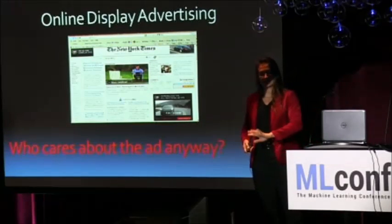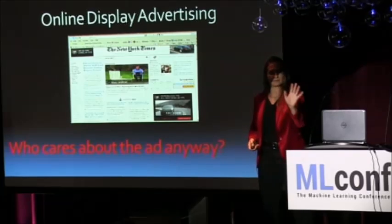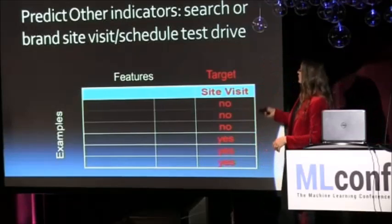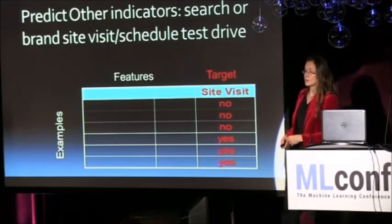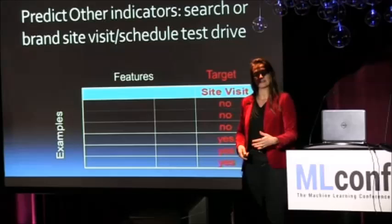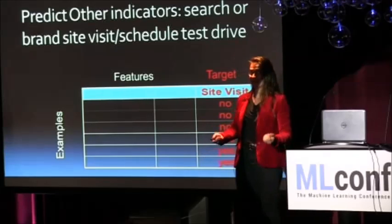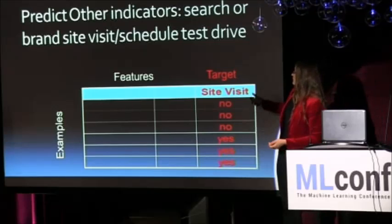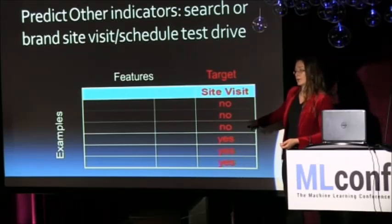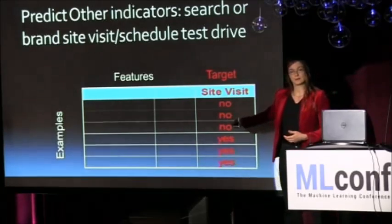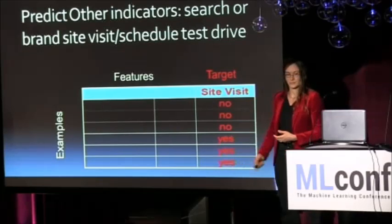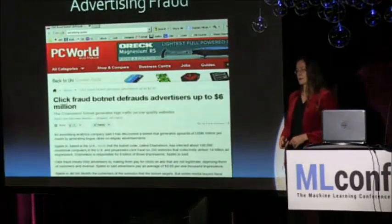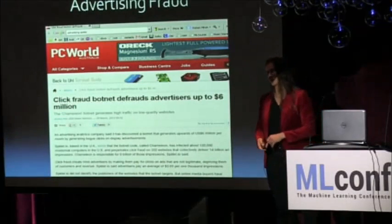Who cares about the ad anyway? Let's leave the question of whether the person saw an ad aside. How about we predict something else we can see more of? For instance, you're not going to buy your Tesla online, but maybe you'll schedule a test drive online — and that I can see. One way to deal with this is trying to get a more prevalent target by looking at correlated actions. But click is not a correlated action, and it turns out these alternative things are better correlated but also much easier to game.